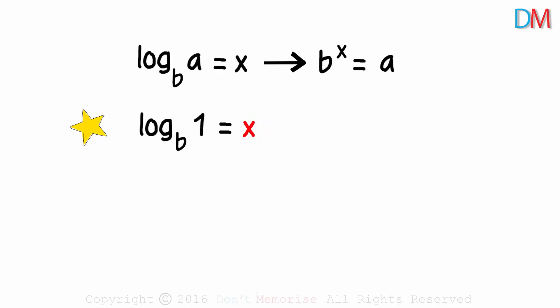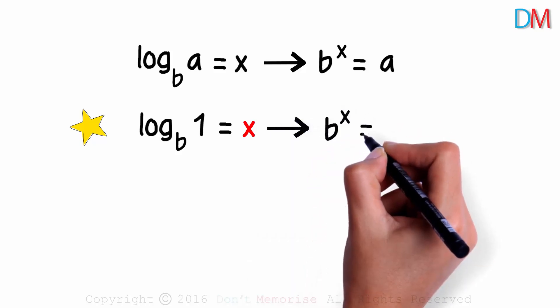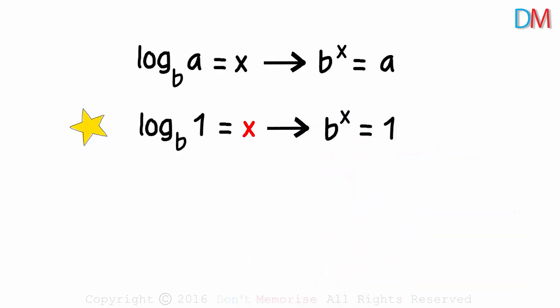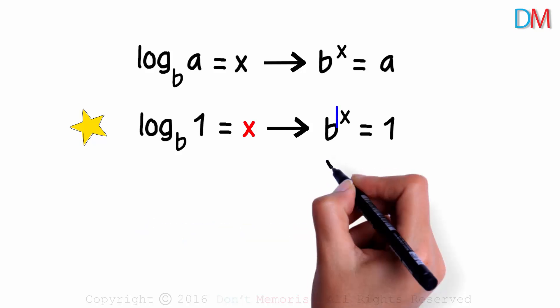Say it equals x. In the exponential form, it can be written as b raised to x is equal to 1. Remember, the exponential form is what most of us are comfortable with. This can help us find the value of x. For the answer to be 1, the power here has to be 0. Do you remember that property of exponents? Any non-zero number raised to 0 is equal to 1. Hence x here is 0.